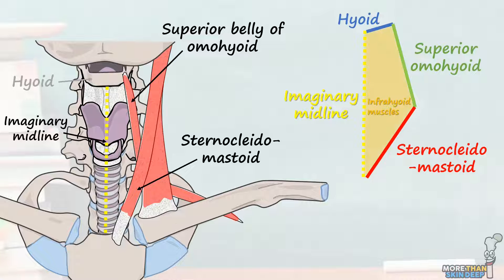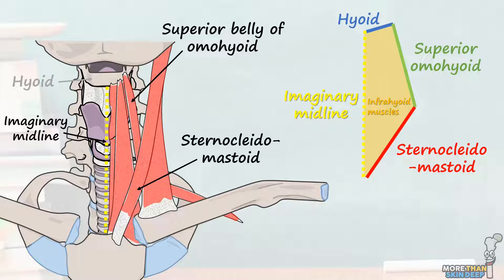In the floor of the muscular triangle lie the remainder of the infrahyoid muscles, giving it its name. These are the thyrohyoid, sternothyroid, and sternohyoid muscles.